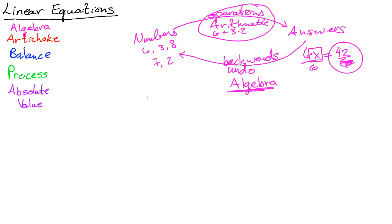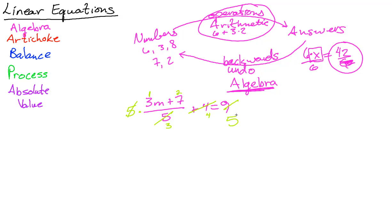We could take a problem such as (3m + 7) / 5 + 4 = 9, and undo it going backwards. If m is the first thing hit by arithmetic, then we peel off in reverse order: subtract 4, then multiply by 5 — the opposite of dividing by 5 — and we get 25. Then subtract 7 and we get 18, then divide by 3 and we get m = 6.